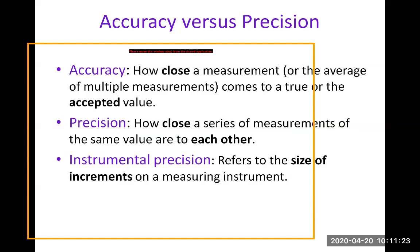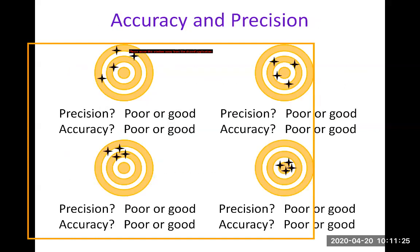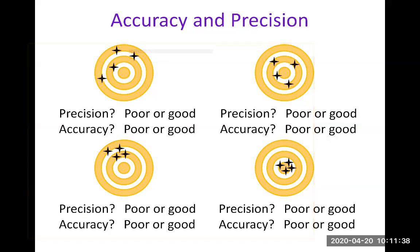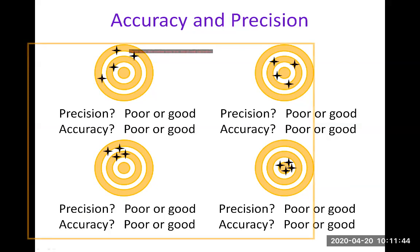So let's practice understanding accuracy and precision. I have these targets here, and the value you want to get is the bullseye in the center, right? So let's start with the upper left target. You have some shots there, you see the black cross, these are the shots.